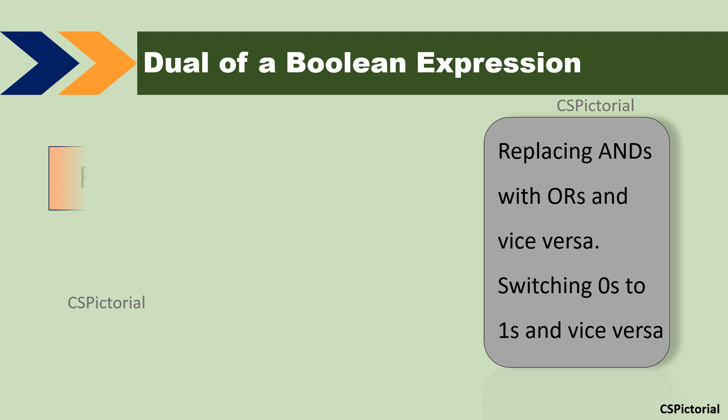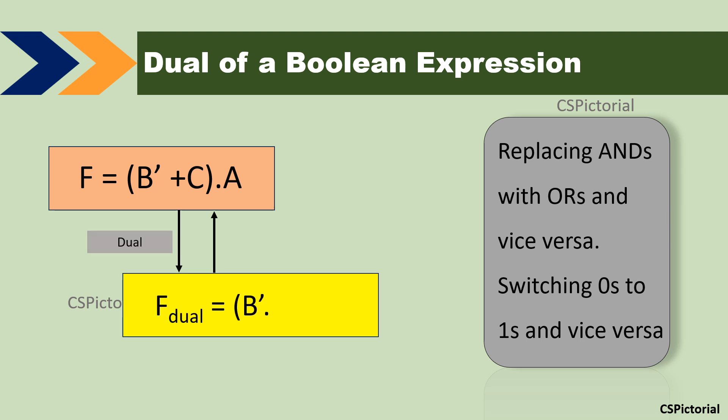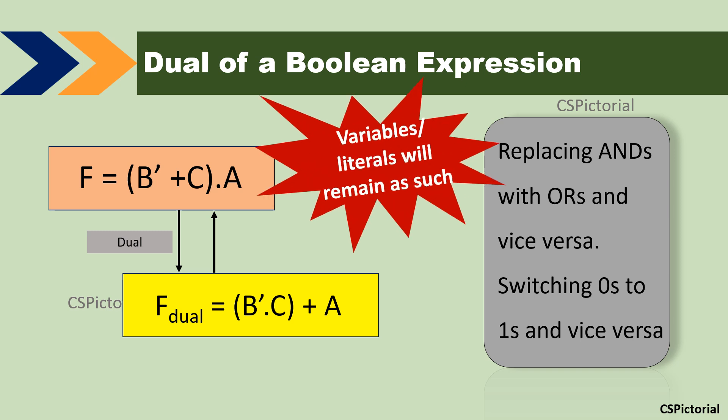Here is another example. The expression is given as F equal to B bar plus C into A. The dual is derived as F-dual equal to B bar dot C plus A. Remember, for duality, replace only the ANDs with ORs and vice versa. The variables will remain as such.